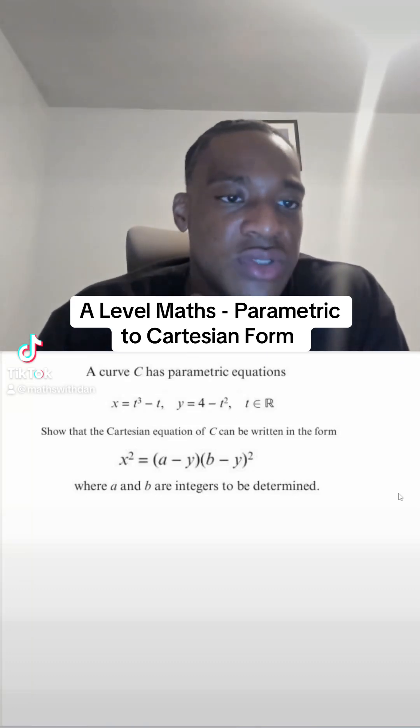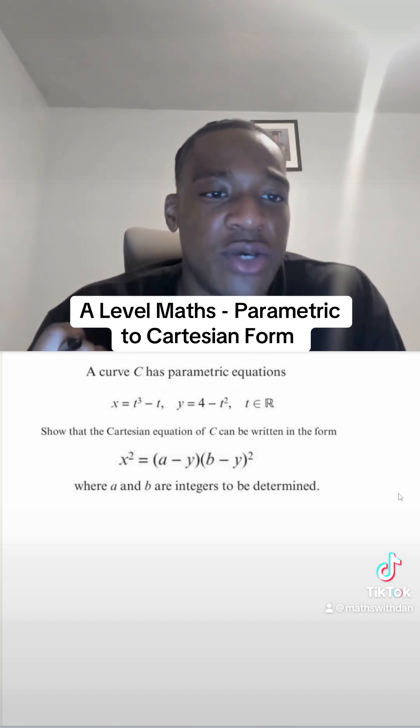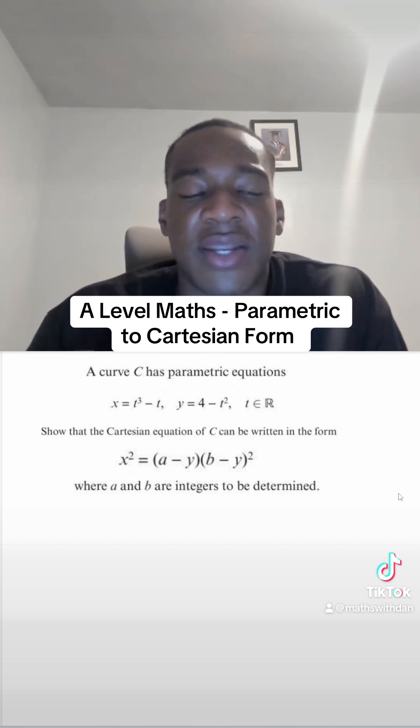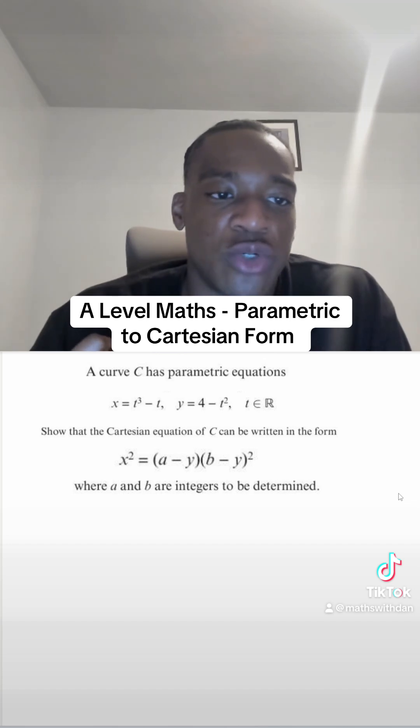A curve C has parametric equations x equals t cubed minus t and y equals 4 minus t squared. Show that the Cartesian equation of C can be written in the form x squared equals (a minus y) times (b minus y) squared, where a and b are integers to be determined.